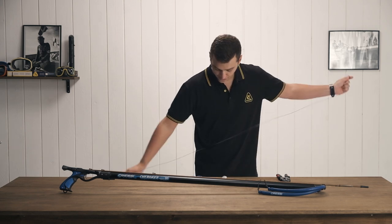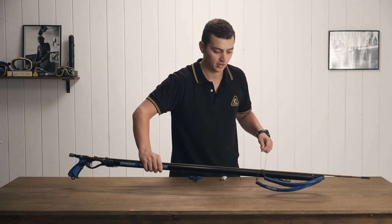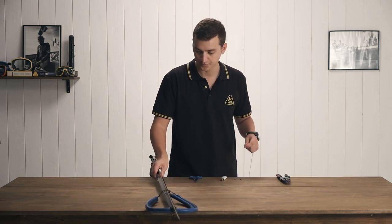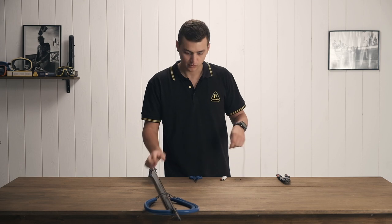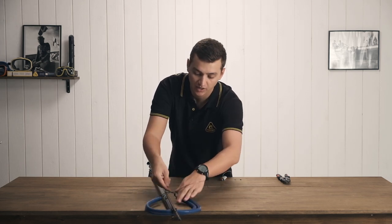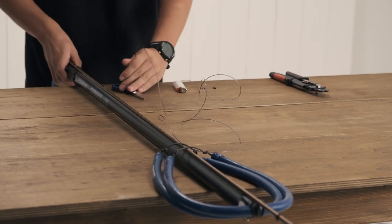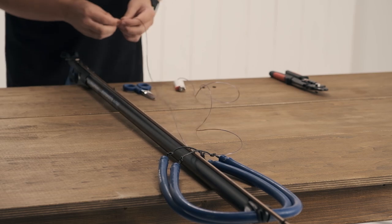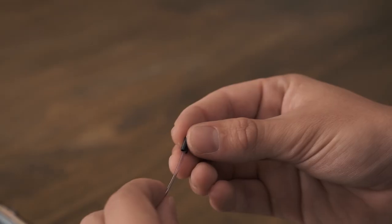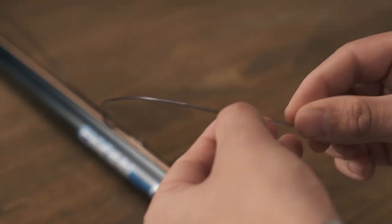For this first step, you can either take the shaft out of the gun or leave it in. I prefer to leave it in. And so what we're going to do is bring the monofilament underneath the bands and down the gun. We are going to take one of our crimping sleeves and slide it down just like that.